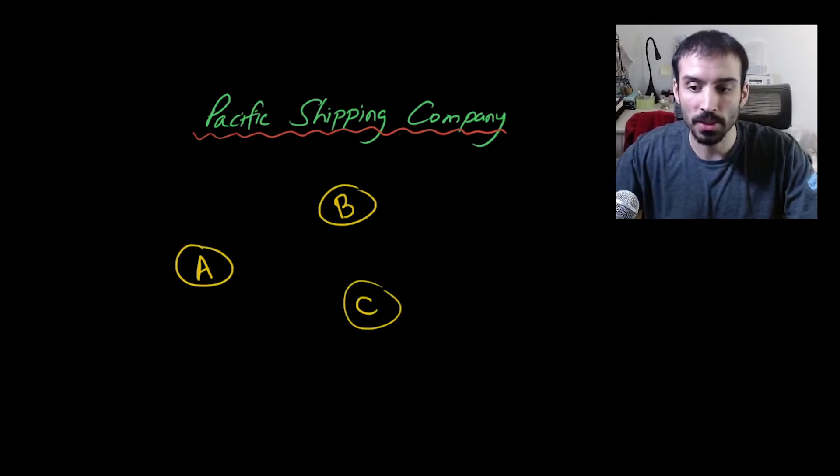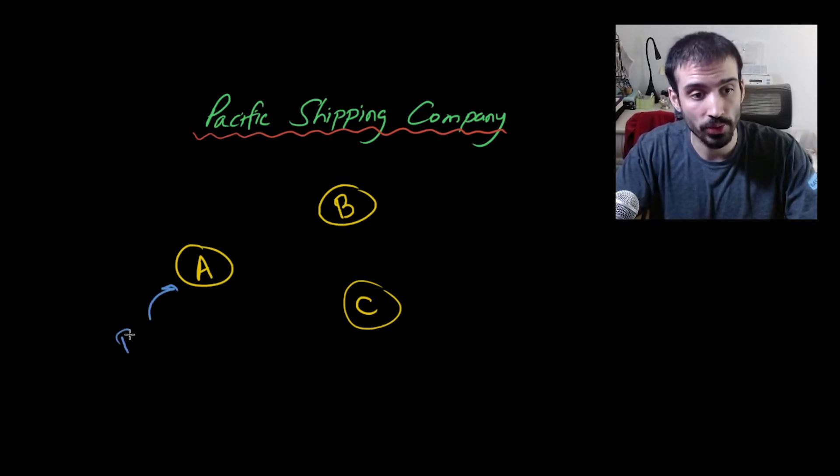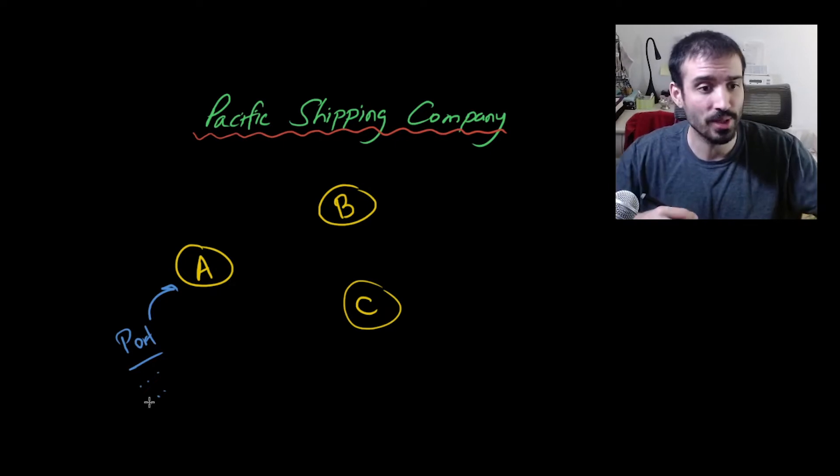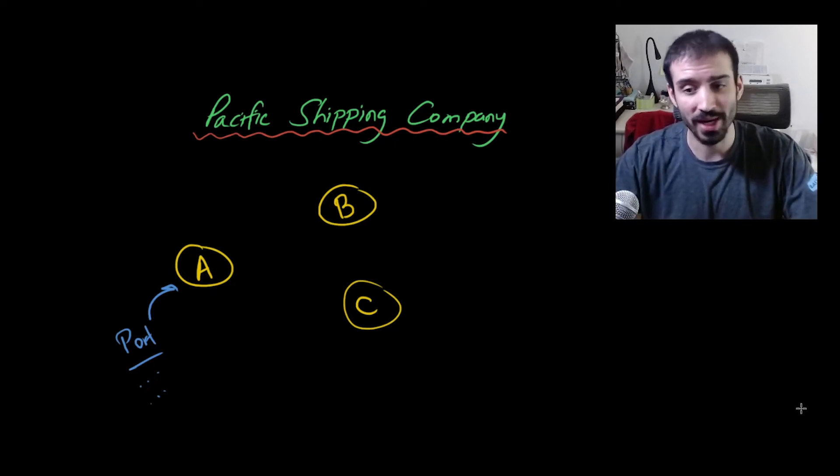So in this domain, in this business problem, we obviously have ports. So these are port objects and they likely have characteristics associated with them such as longitude, latitude, name, address, all that kind of stuff.